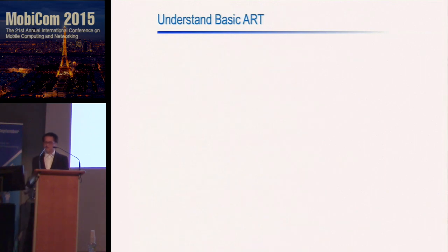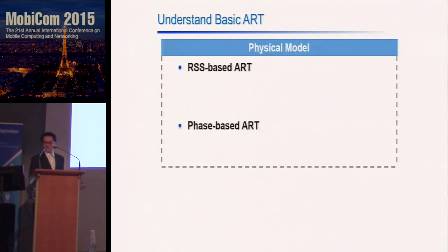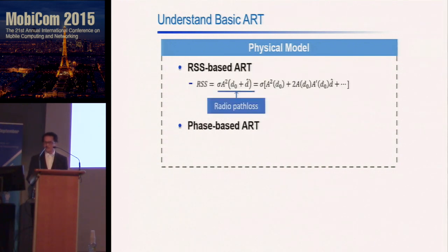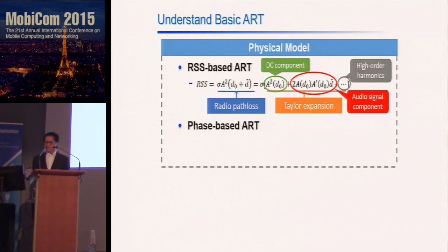The key question in ART is how to recover audio from wireless signals. To understand this, we built a physical model. We already noted that audio can be recovered from the RSS and phase of wireless signals. For the RSS-based ART, we model it following the typical wireless communication channel. Function A describes the path loss model, and if we expand it using Taylor theory, we can see audio signal components where RSS is proportional to the displacement of loudspeaker vibrations, plus DC components and higher-order harmonics.